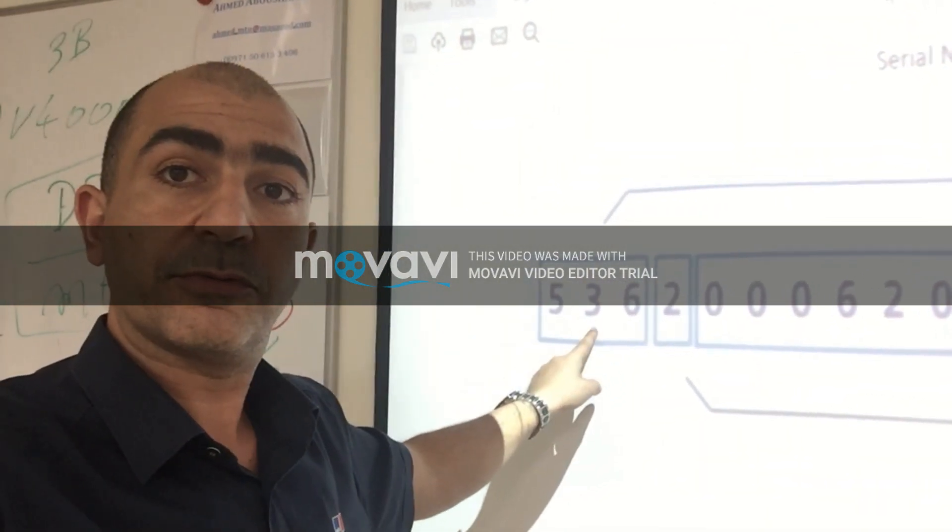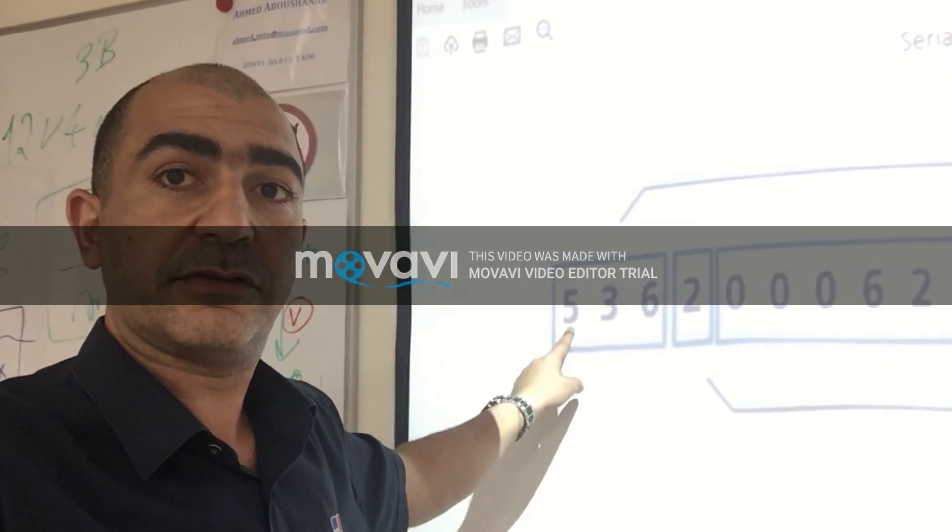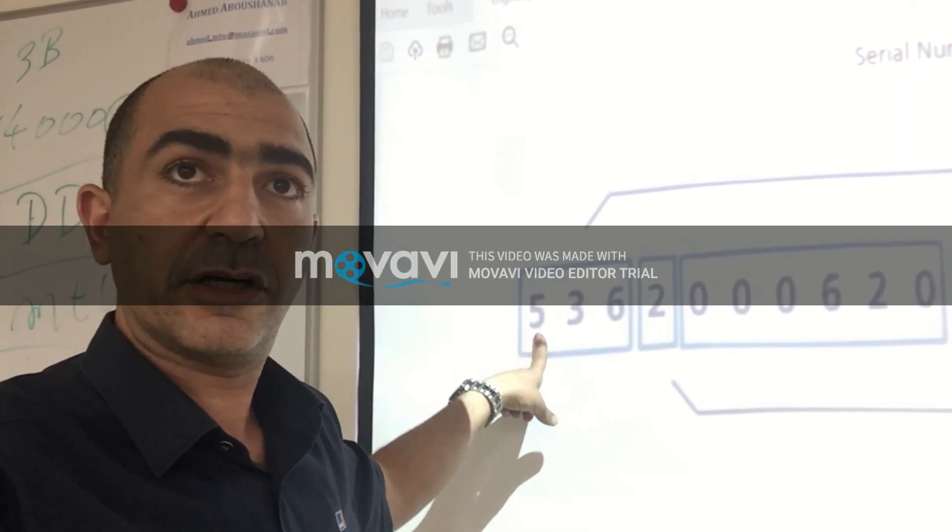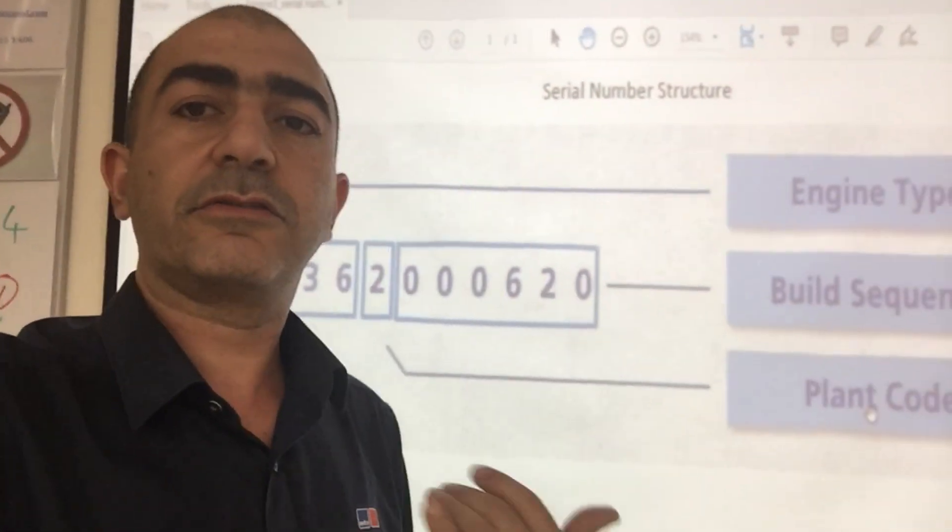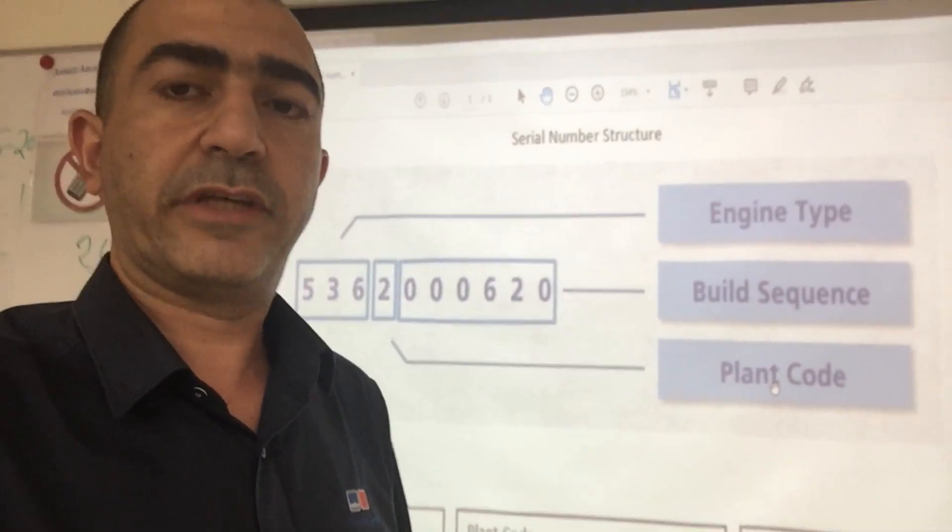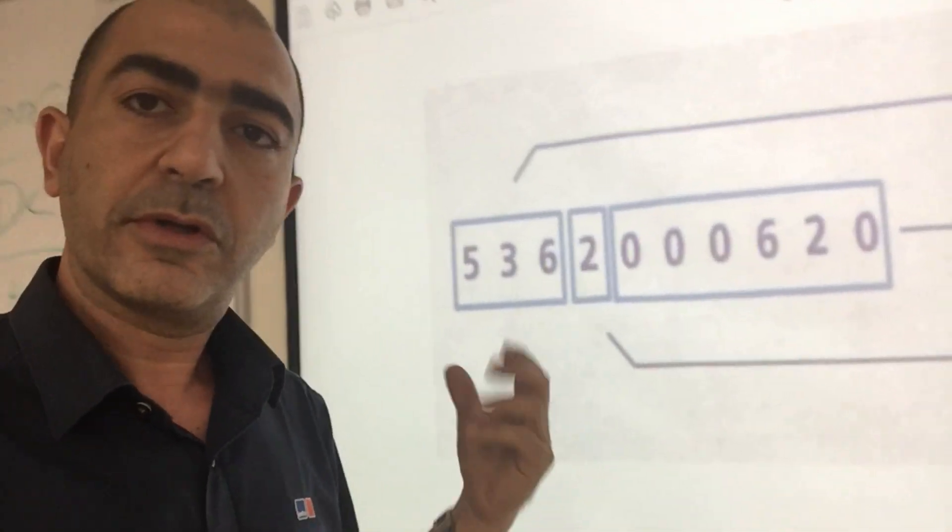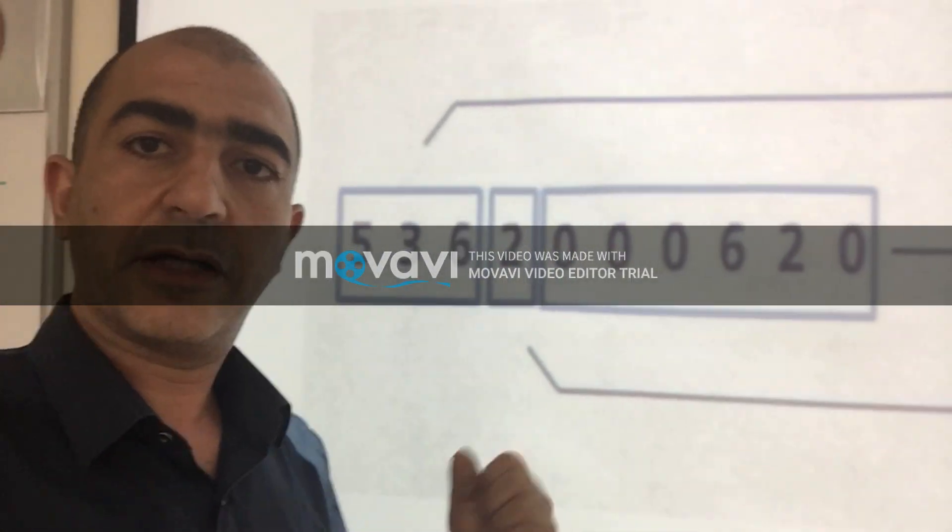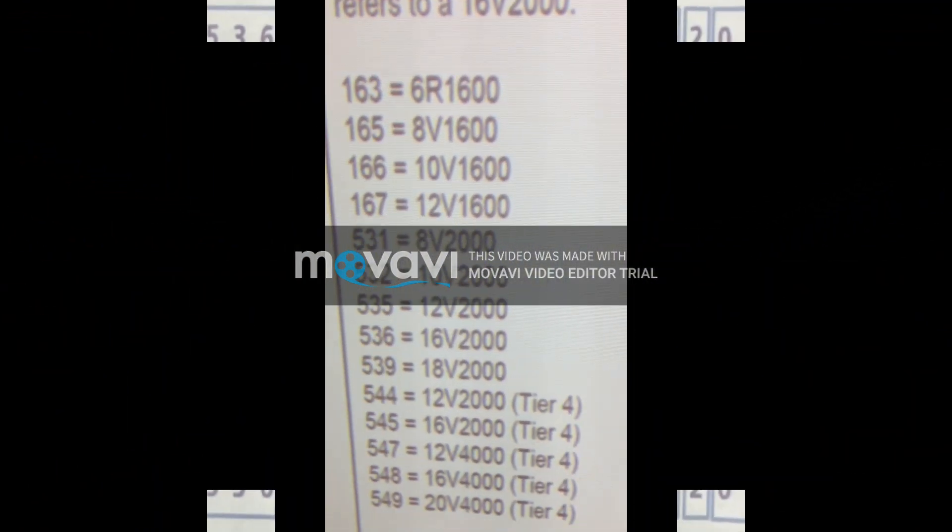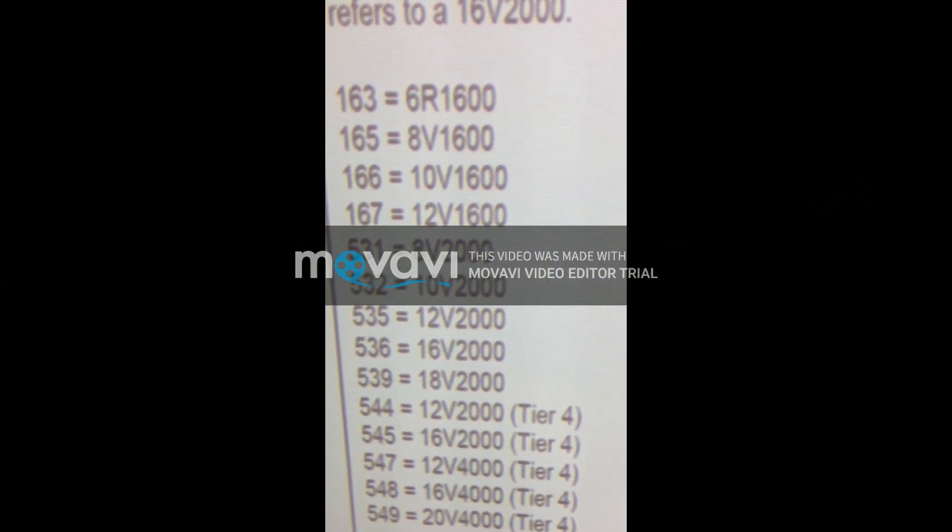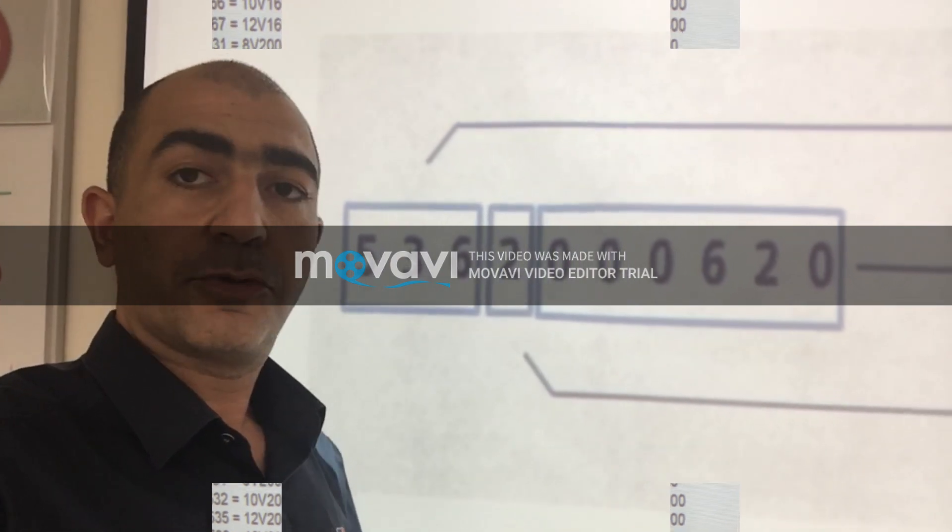...to you that when they write 536, that means this engine is a 16 V2000. But it is not mentioned whether it is 2000 marine or not - it only indicates the number of cylinders plus the series model. The fourth digit...